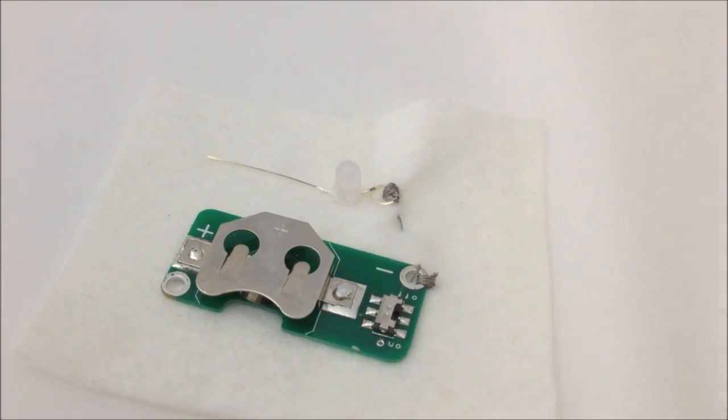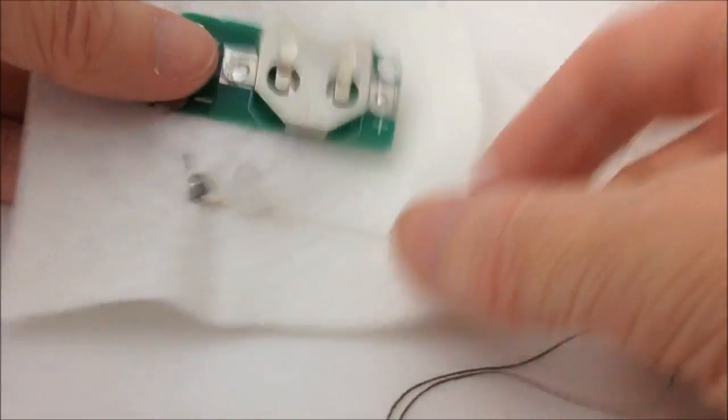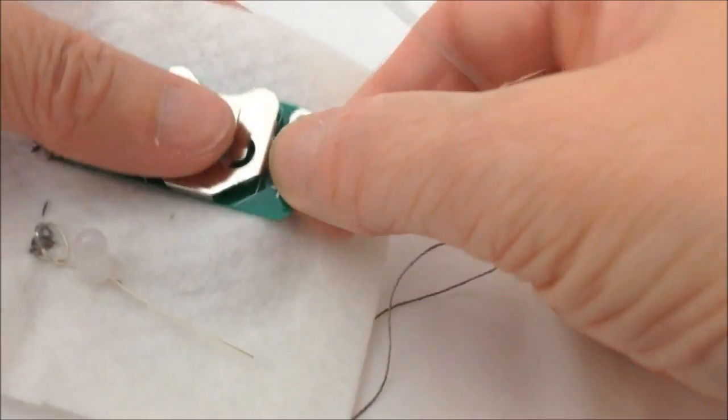So now we're going to do the second side of the circuit, the positive side. I'm just going to turn this around just to make it a little bit easier to stitch. I'm going to do exactly the same thing.